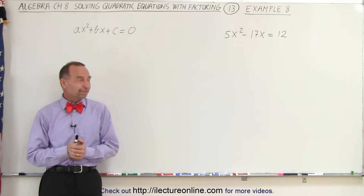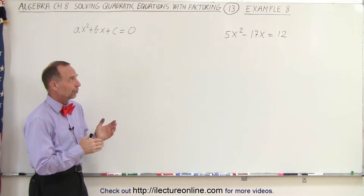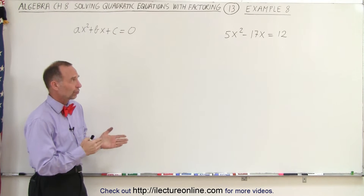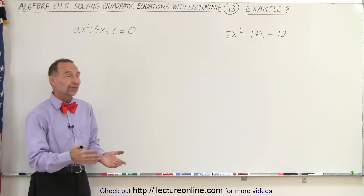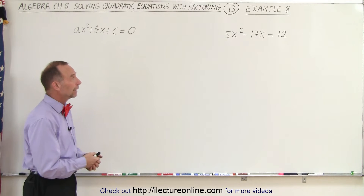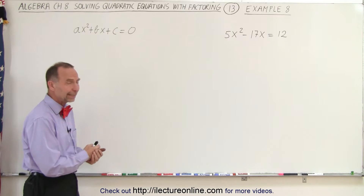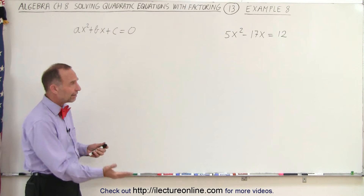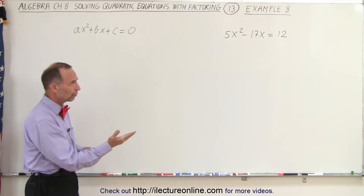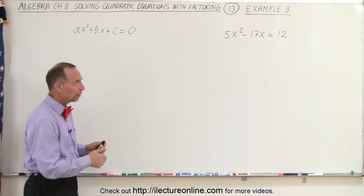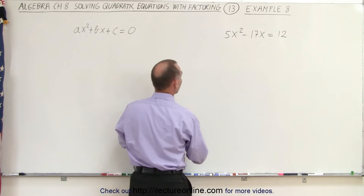Welcome to our lecture online. Our next example looks like it's in a strange format — I don't see any zeros anywhere, and we only have two terms on the left side. But if we move everything to the left side, moving the positive 12 to the left, we will have what we would call the standard form.